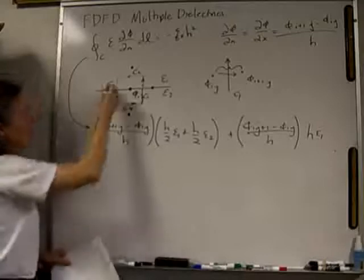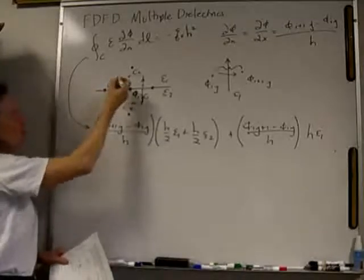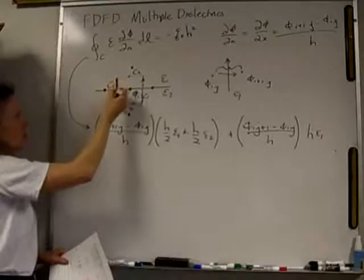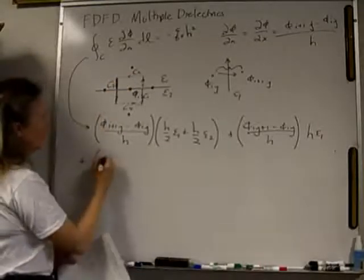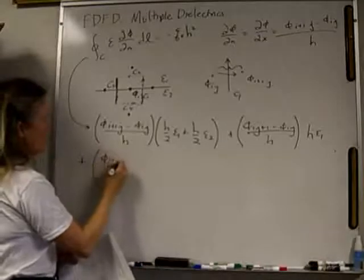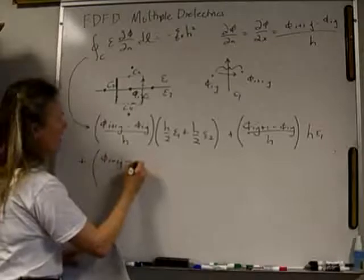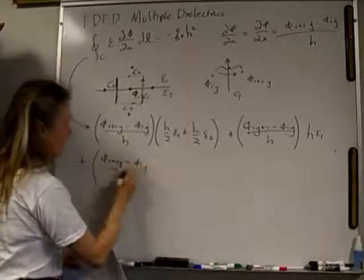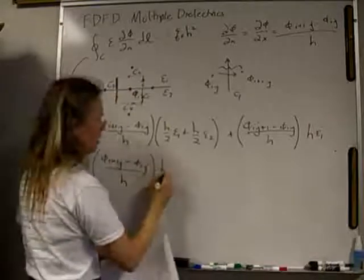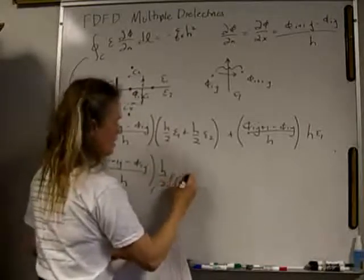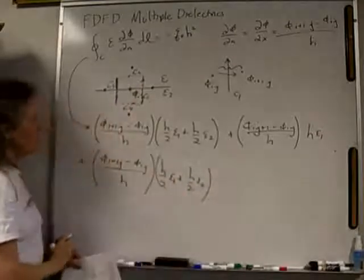Now let's do the bottom. The bottom... I'm sorry, the left part we're going to do in two parts just like we did the right. We're going to do this piece and this piece. So first, let's write our derivative. Our derivative is phi I minus 1J minus phi IJ divided by H. There's my normal derivative. The first piece right here is going to be H over 2 times epsilon 1 plus H over 2, the next piece, times epsilon 2.